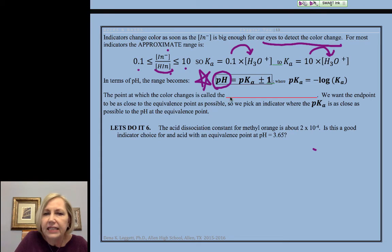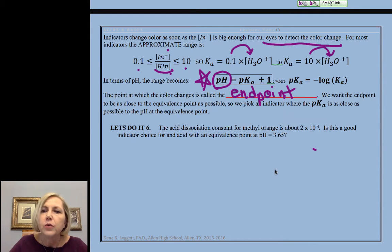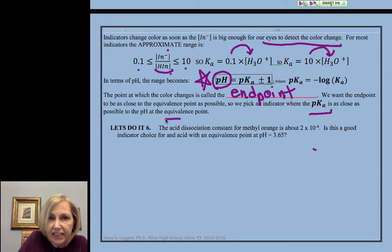And I already mentioned this. Let me just fill in this blank, or we'll have angst in class. It's called the end point. So we want that end point as close as possible. So we pick an indicator where the pKa is as close as possible to the pH of the equivalence point.